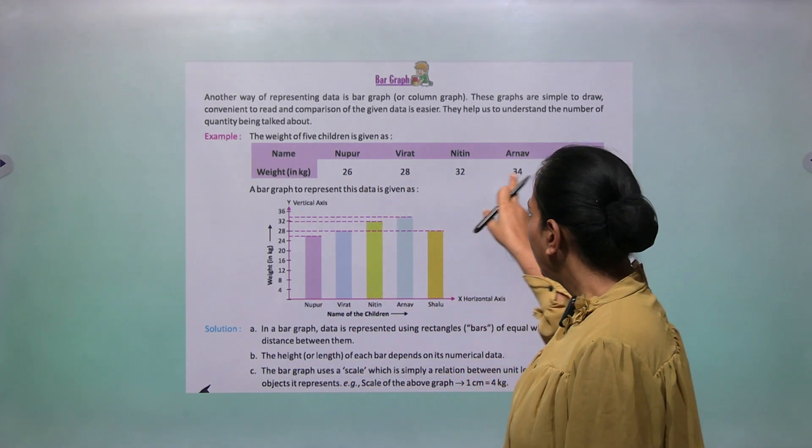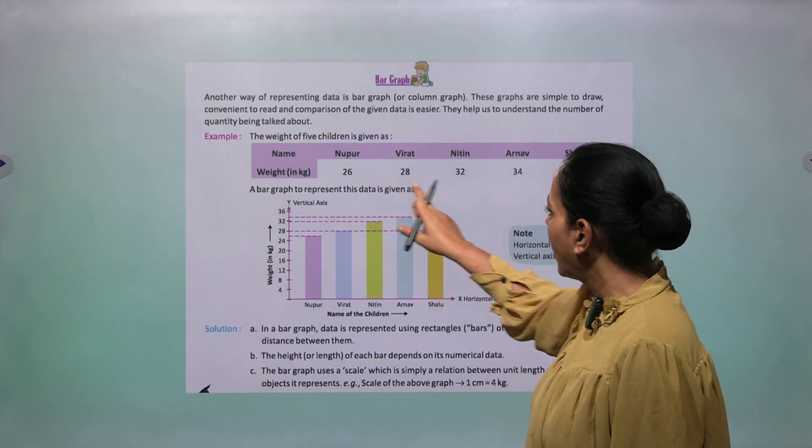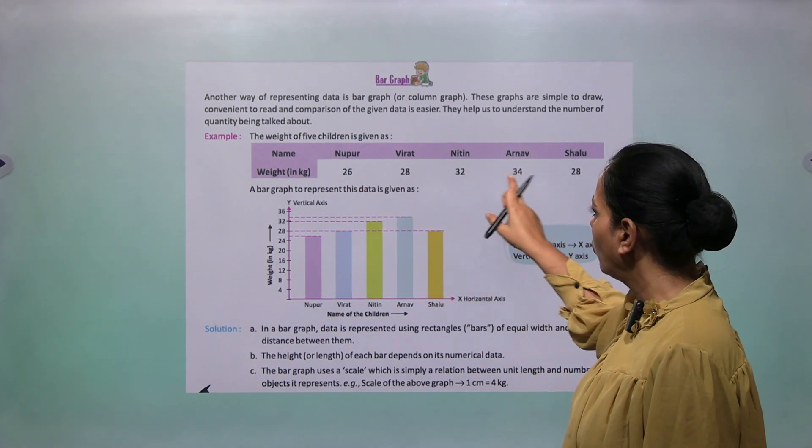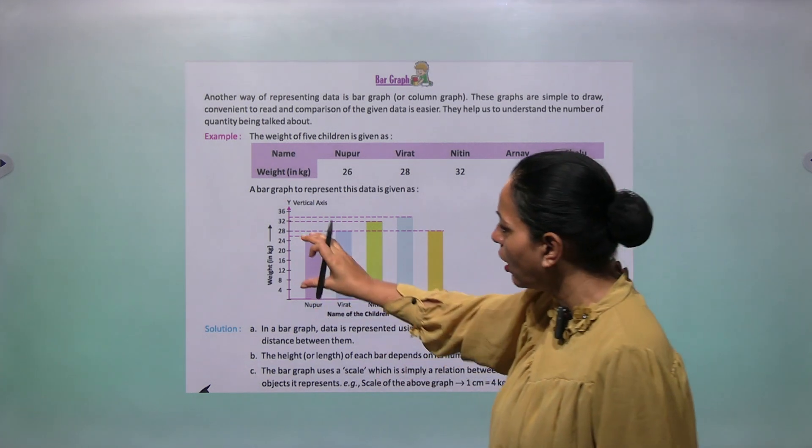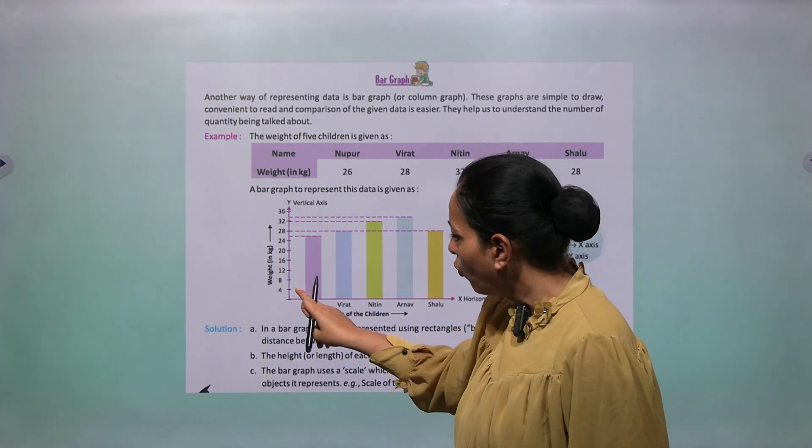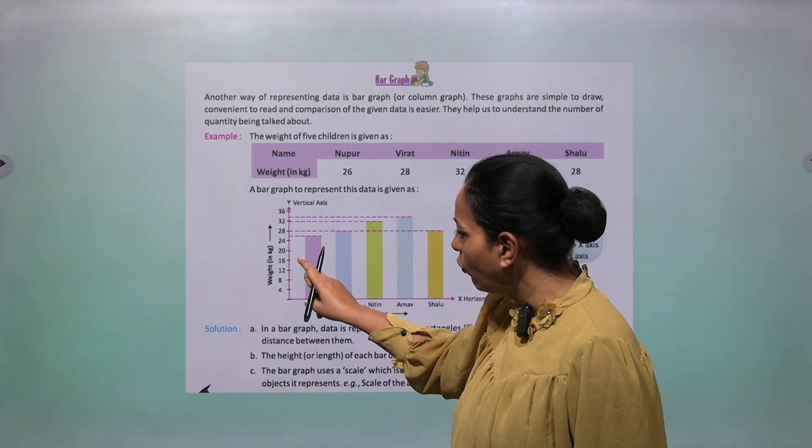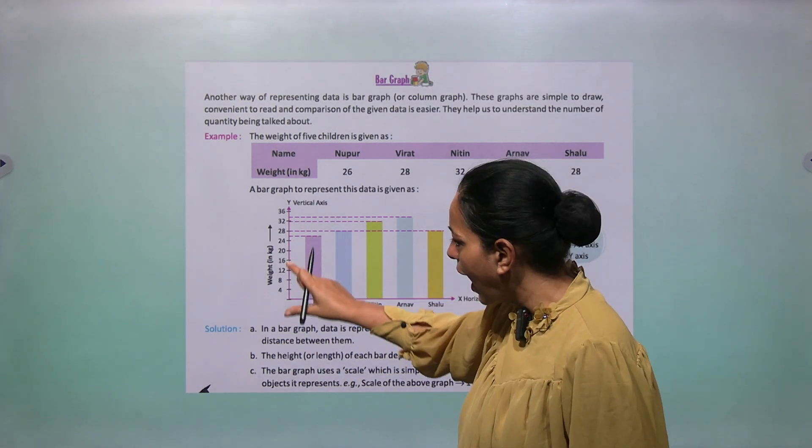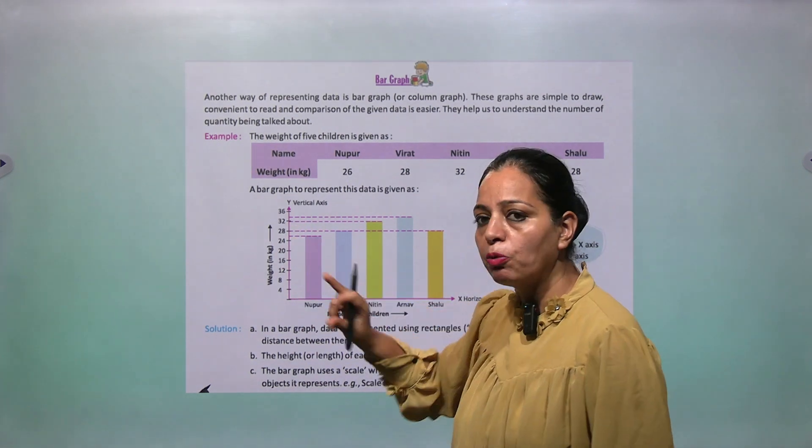Now what you have to do: see first, see the numbers. Numbers are like 26, 28, 32. You can see 4 is visible, so take 4 gap. So 4, then 8, then 12. And keep in mind this gap between the numbers should be same.